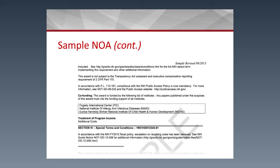Section 4 will show you any revisions — if the award has been revised, it will indicate that and give you the reason why the award was revised. It would also reflect any carryover. It will also include restrictive terms, which may require specific action on your part before you can do any work on the project.